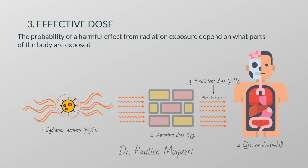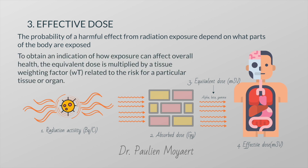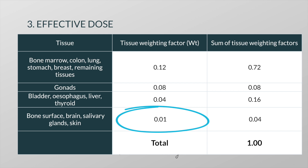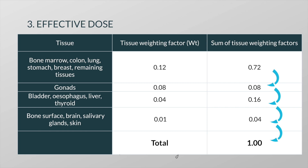The probability of a harmful effect from radiation exposure depends on what part or parts of the body are exposed. Studies have shown that the risk of damage leading to cancer or serious genetic disease is greater in tissues where cells divide frequently — for example, bone marrow is much more radiosensitive than muscle or nerve tissue. To obtain an indication of how exposure can affect overall health, the equivalent dose is multiplied by a tissue weighting factor related to the risk for a particular tissue or organ. Bone marrow, colon, lungs, stomach, and breasts are given a high factor of 0.12 because these are organs with a high risk of radiation-induced fatal cancer. The skin, on the other hand, is assigned a factor of 0.01. If more than one organ is exposed, then the effective dose is the sum of the effective doses to all exposed organs.